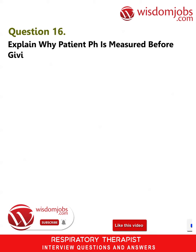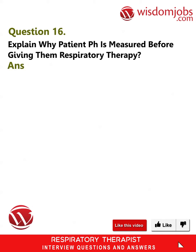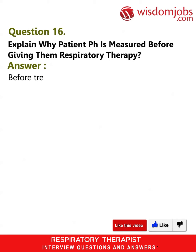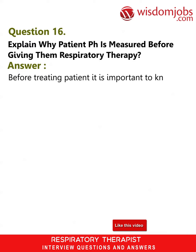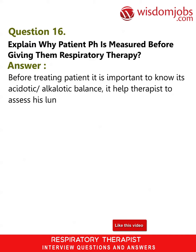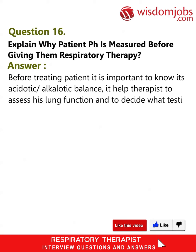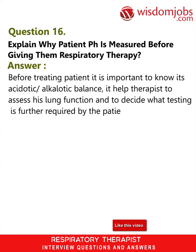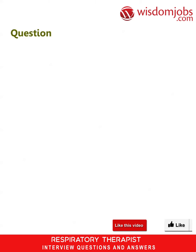Treatments include antibiotics, bronchodilators, steroid aerosol sprays, oxygen therapy, and stopping smoking. Question 16: Explain why a patient's pH is measured before giving them respiratory therapy. Answer: Before treating a patient, it is important to know their acidotic/alkalotic balance. It helps the therapist assess lung function and decide what further testing is required by the patient.